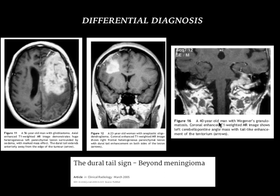This is a 40-year-old man with a known case of Wegener's granulomatosis. You can see a heterogeneously and intensely enhancing lesion in the left CP angle, and you can see the tentorium on the left side is thickened and showing enhancement — a case of Wegener's granulomatosis.